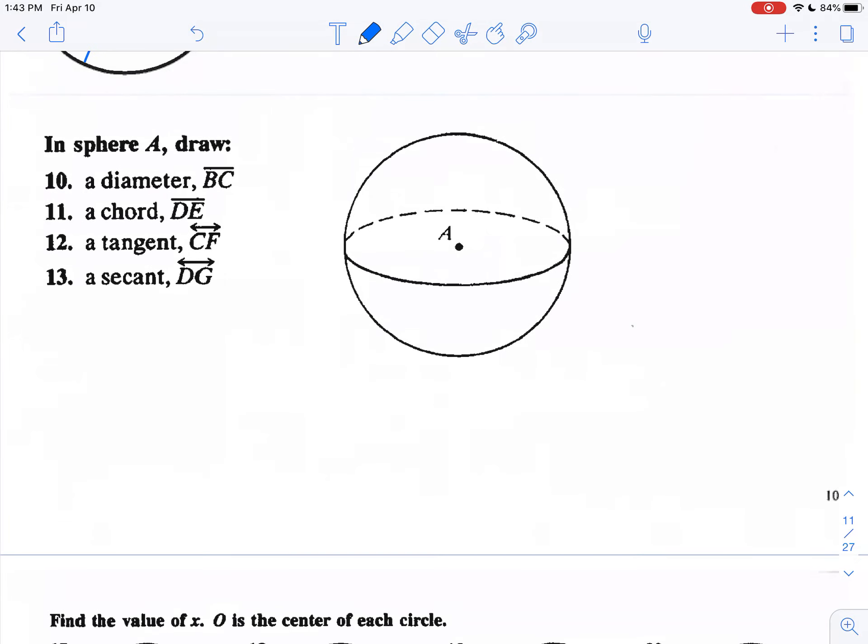The great circle happens to be the circle that cuts across the center of the sphere. So in sphere A, draw a diameter BC. I'm going to purposefully draw the diameter so it doesn't fall in the great circle. But this is an example of a diameter where you have two points on the sphere and then it passes through the center.